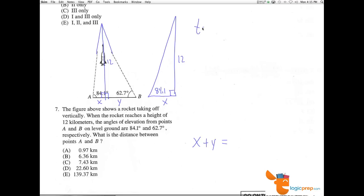So the tangent of 84.1 equals opposite over adjacent. And in this case, the tangent of 84.1 equals 12 over X. If I put tan of 84.1 over 1 and cross multiply, X tan 84.1 equals 12. And now to isolate X, I'm going to divide both sides by the tangent of 84.1.